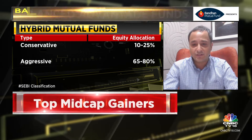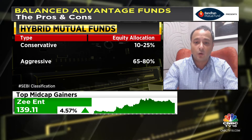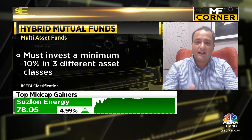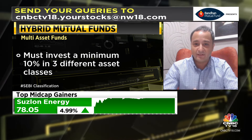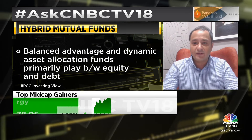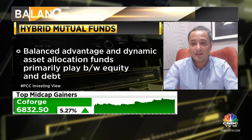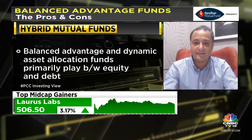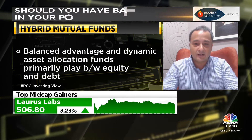BAF and DAF funds play primarily between equity and debt with no restrictions, so the fund manager has the leeway to vary equity exposure all the way from zero to 100%. You can think of BAF funds as funds that are at times aggressive, at times moderate, and at times conservative. The output is an equity-to-debt ratio — for example, 70:30 — and when markets are perceived to be very risky, the manager can rebalance to 30:70. It's this dynamism and flexibility that has struck a chord with investors.